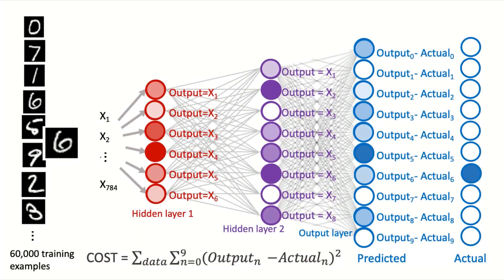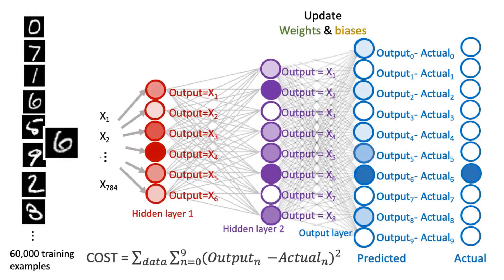Now it's time to do backpropagation with the chain rule. This means we're going to update weights and biases starting from the output layer, and working backwards from there through the hidden layers. First we calculate the gradient of the cost function with respect to the weights and biases of the output layer, and we update these in accordance to the negative gradient. This change in weights and biases should change the output to be closer to the actual answer that we want. The cost function should now decrease.